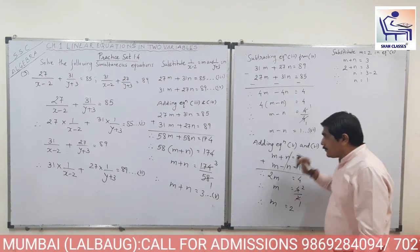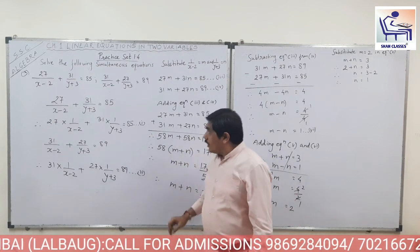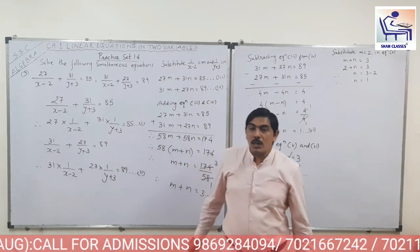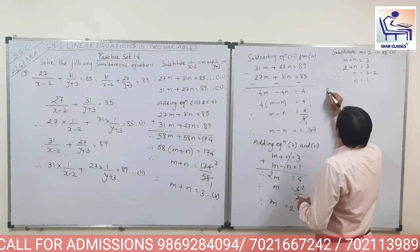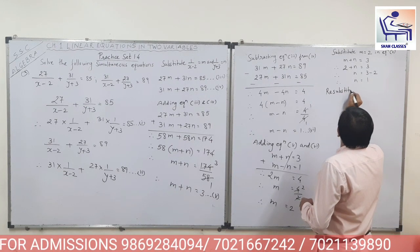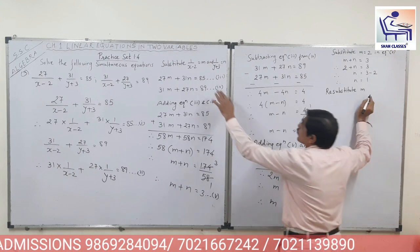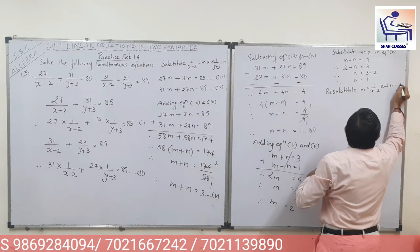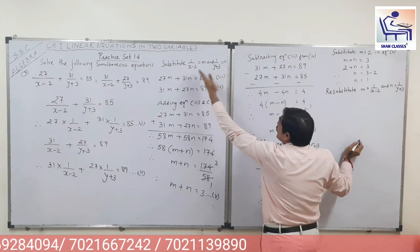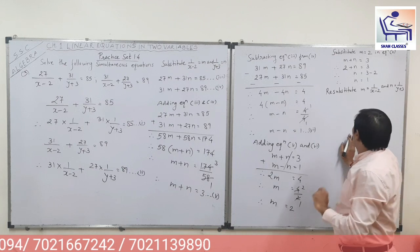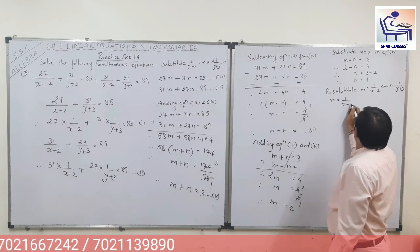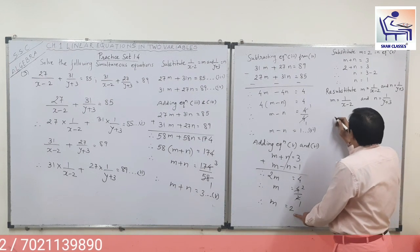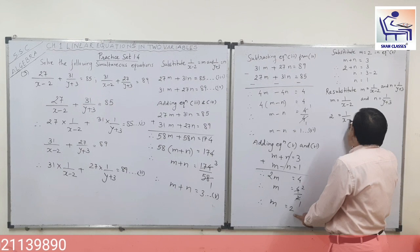Now we have to resubstitute. M equals 1 upon (x minus 2) and N equals 1 upon (y plus 3). We will resubstitute to get the value of x and y. M is equal to 1 upon (x minus 2) and N is equal to 1 upon (y plus 3). The value of M is 2: so 2 is equal to 1 upon (x minus 2).